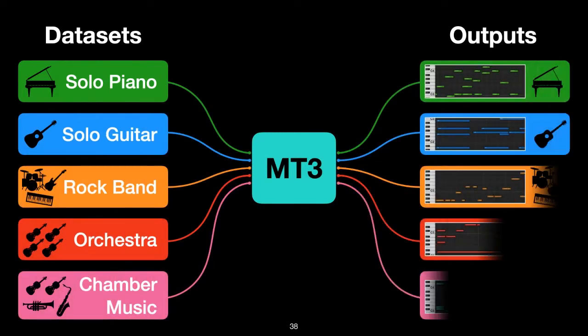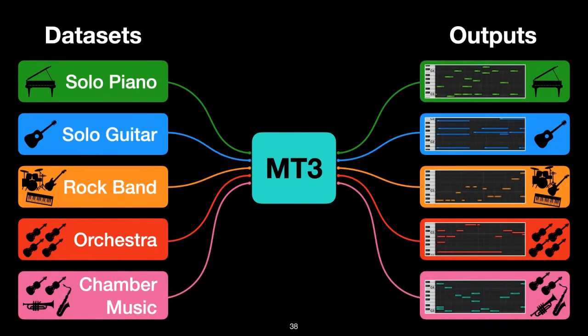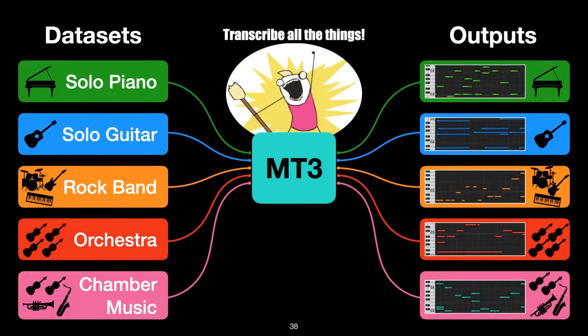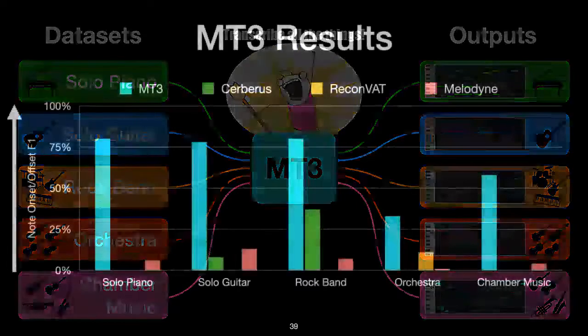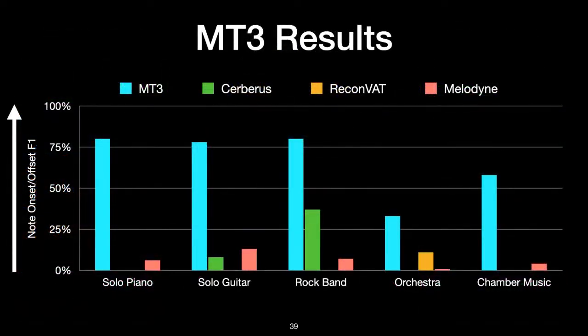One of the main appeals of this vocabulary is that we can now train MT3 on any dataset that we can get our hands on. And the only real limitation to the output data is what data we have. This allowed us to train an MT3 model on every transcription dataset we could find, all at the same time. So we compared this giant MT3 model to all the models, including the Cerberus model I just showed you, and the commercial software Melodyne. In this graph, MT3 is blue, which are the high bars, and higher values are better. And clearly MT3 is able to take advantage of all this extra training data, and get better transcription performance than any other system that we've tested against.